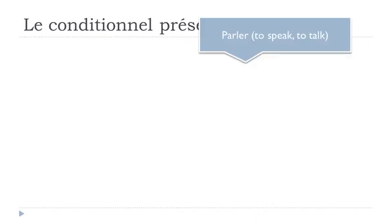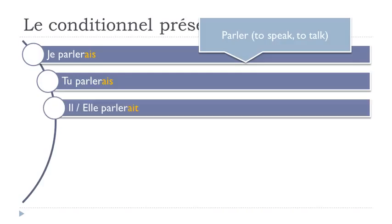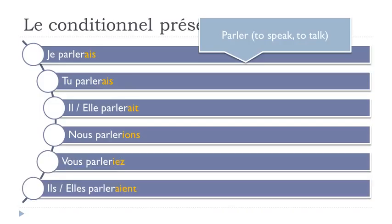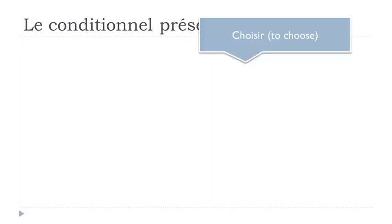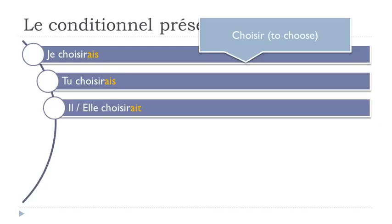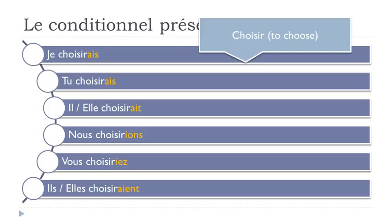For parler (to speak): je parlerais, tu parlerais, il parlerait, elle parlerait, nous parlerions, vous parleriez, ils parleraient, elles parleraient. For choisir (to choose) from the second group: je choisirais, tu choisirais, il choisirait, elle choisirait, nous choisirions, vous choisiriez, ils choisiraient, elles choisiraient.